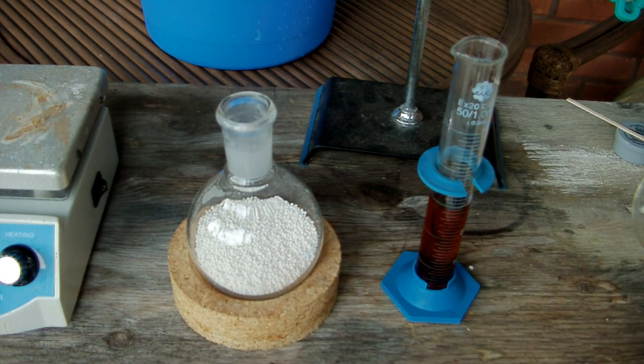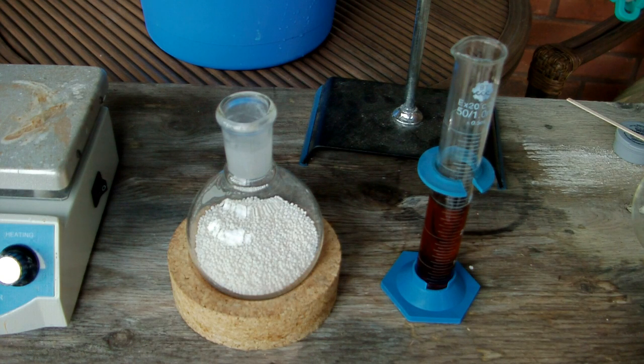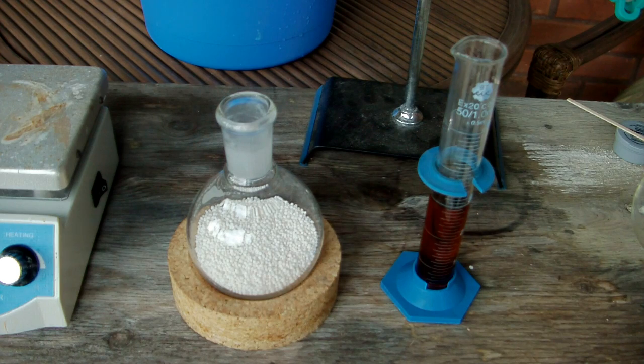Hey everyone, in today's video we're going to be making nitric acid using the distillation method. This requires that you get any nitrate salt and concentrated sulfuric acid. When you combine these two, you make nitric acid and the corresponding sulfate salt.